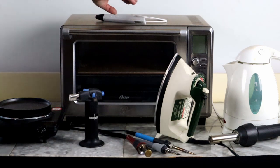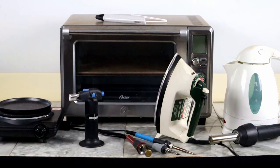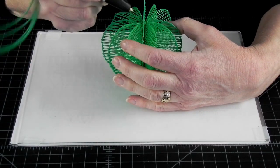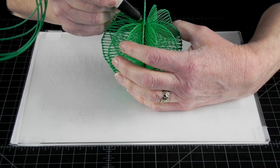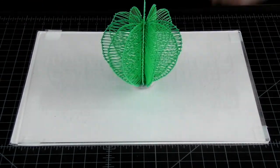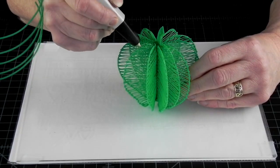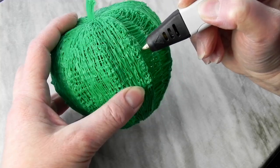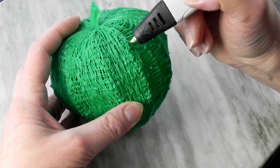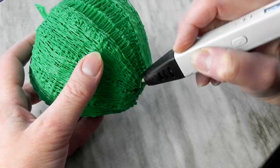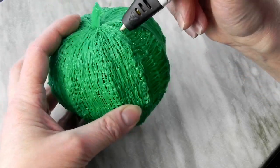3D pens are essentially also heat tools. They allow you to shape the plastic filament into any shape you wish, but they have their limits, especially when it comes to the surface finish, which ends up looking usually rather stringy.